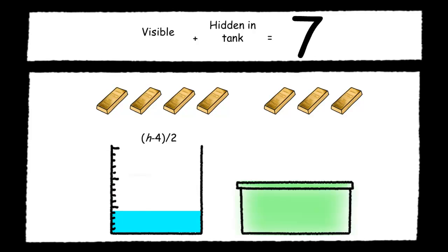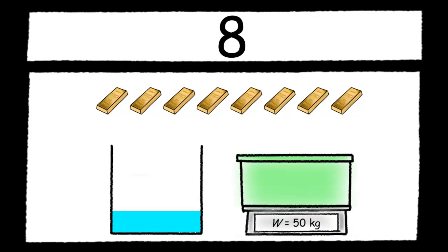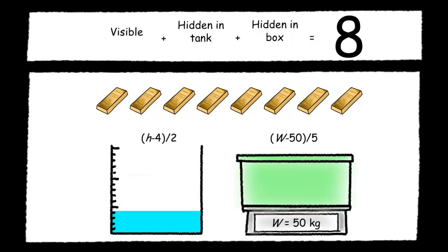Wait, 1 is missing, and I don't think they are hidden in the fish tank. Where could they have gone? Maybe they are in the box. Let's weigh the box. Sure enough, the weight changes. So I spent time studying the pattern and derived the formula for the number of gold bars hidden in the box: weight minus 50 divided by 5.